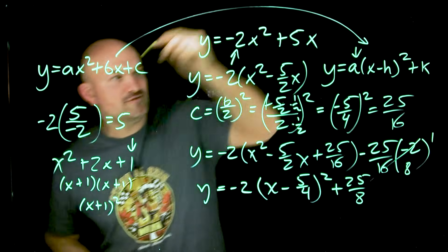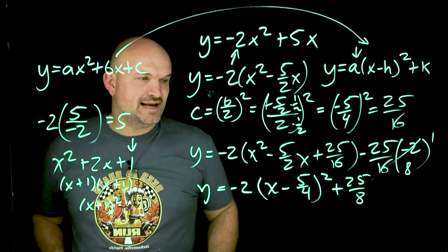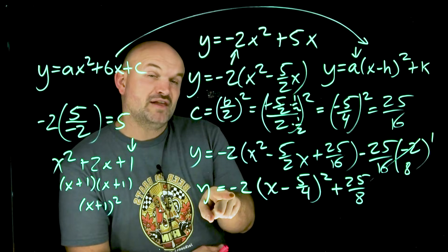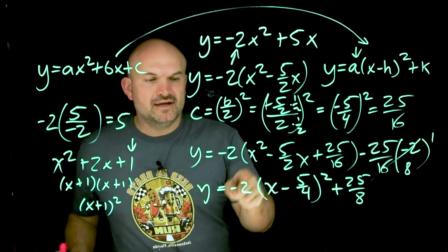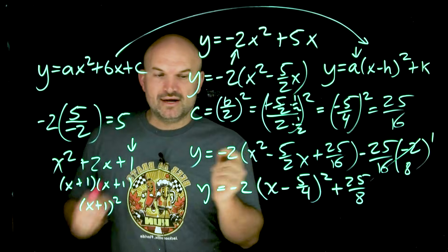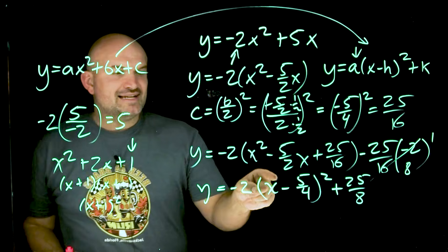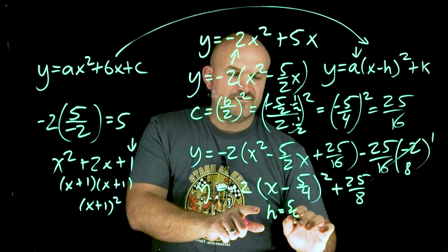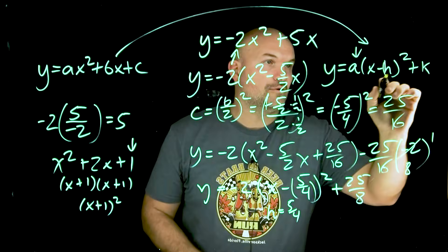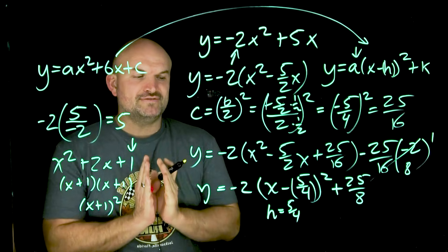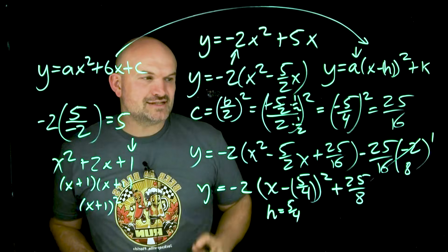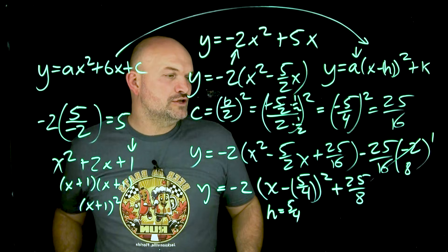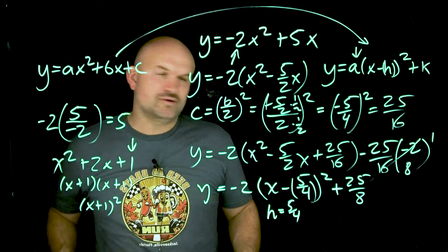We've now gone from standard form all the way to vertex form. The transformations are: a reflection about the x-axis, so the graph opens down instead of up; a vertical stretch by a factor of 2, since the absolute value of a equals 2, which is greater than 1; a horizontal shift of 5 fourths to the right, since h equals 5 fourths in x minus h; and a vertical shift up of 25 over 8 units, since k equals positive 25 over 8 — roughly 3 and 1 eighths units up.